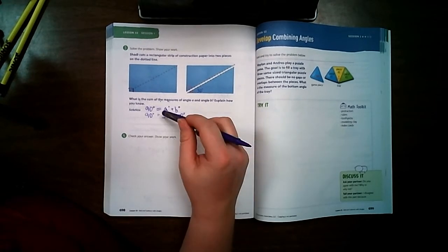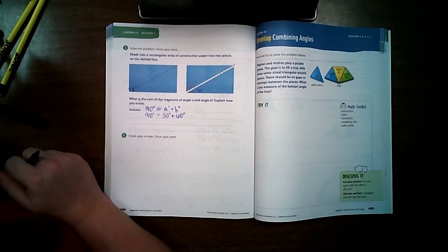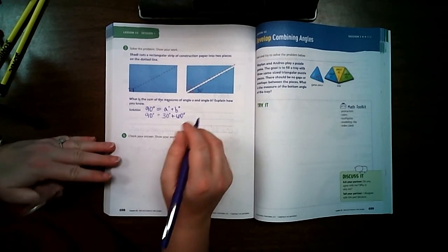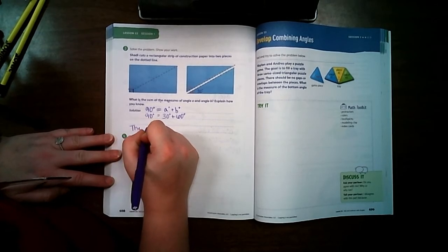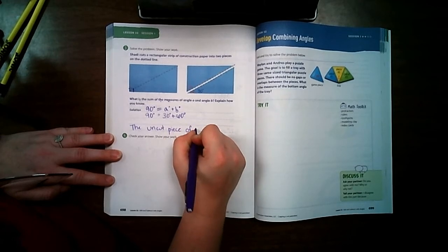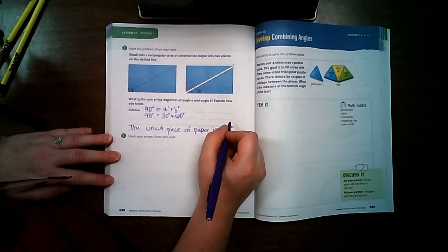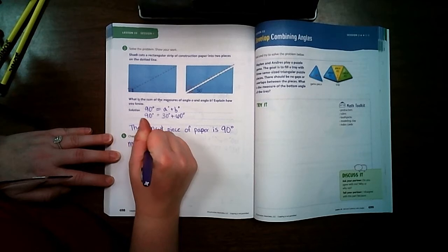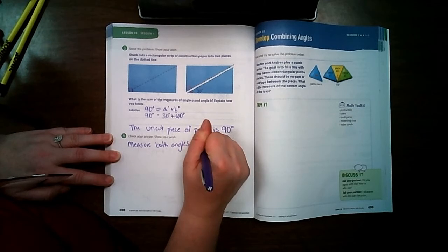And in our case, the angles measured 30 degrees and 60 degrees. Or some of you may have gotten 29 degrees and 61 degrees. Because it was very close. So the sum of A and B is 90 degrees. Because the uncut piece of paper is 90 degrees. And so then I measured both angles and add them together.